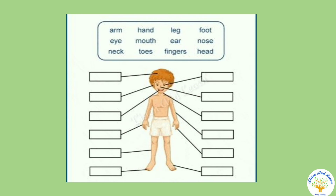A very familiar diagram — body parts. Arm, hand, leg, foot, eye, mouth, ear, nose, neck, toes, fingers, head. Label them properly in the given boxes.